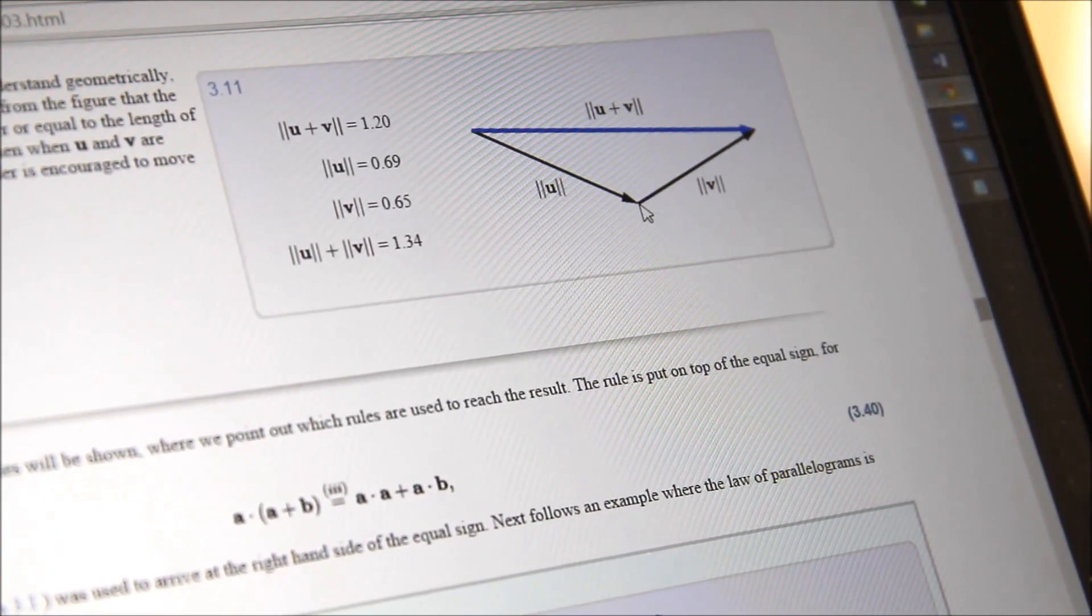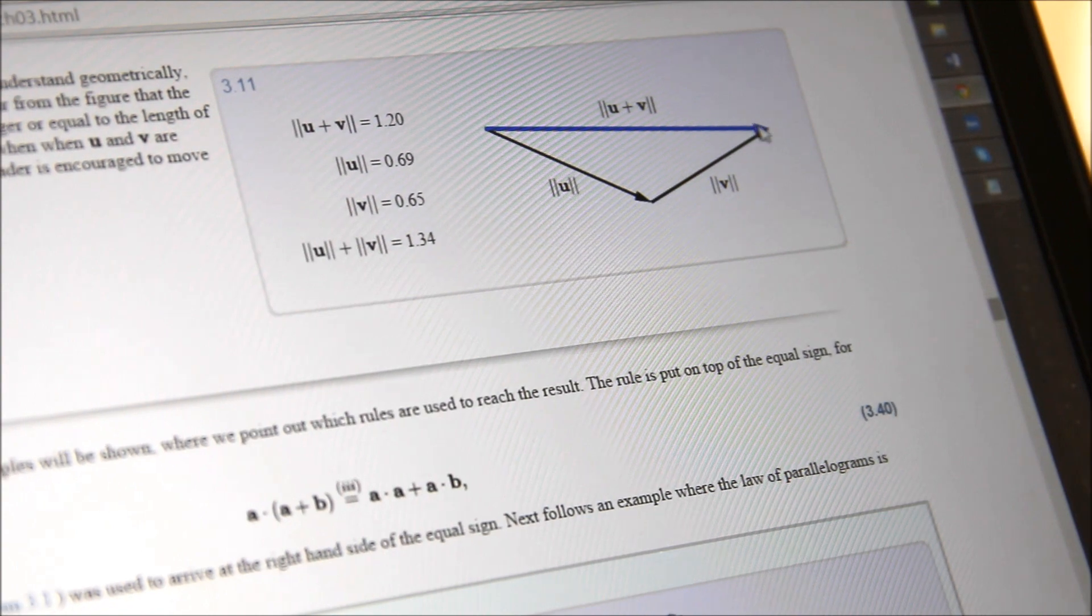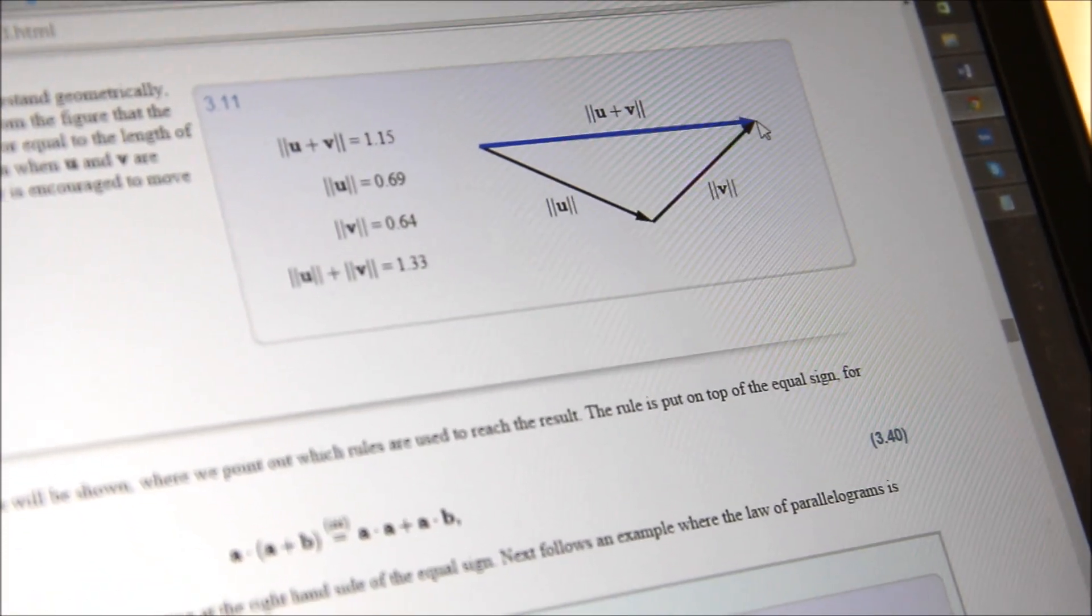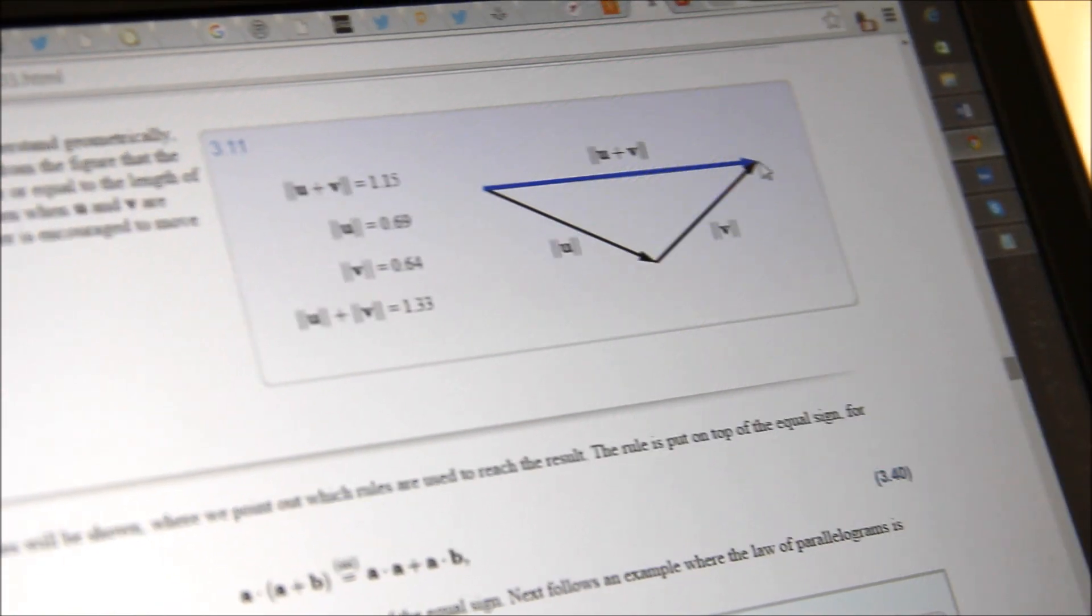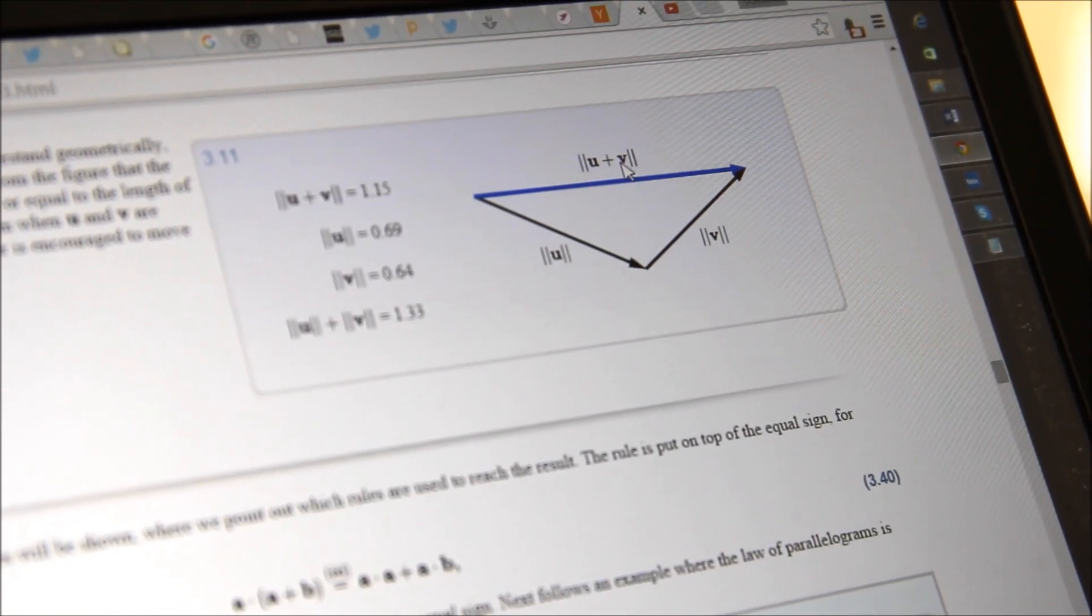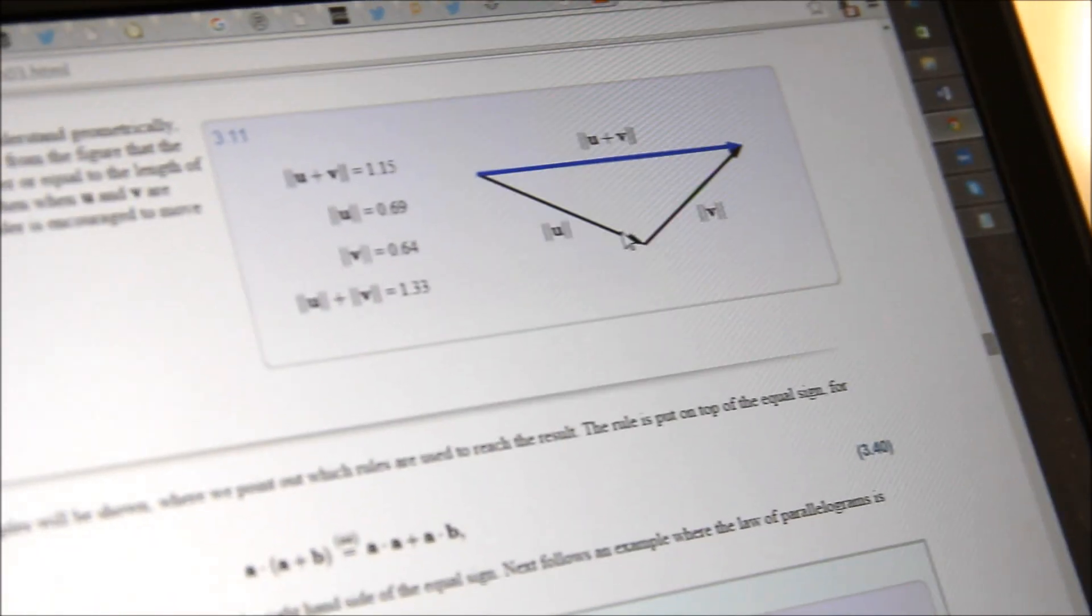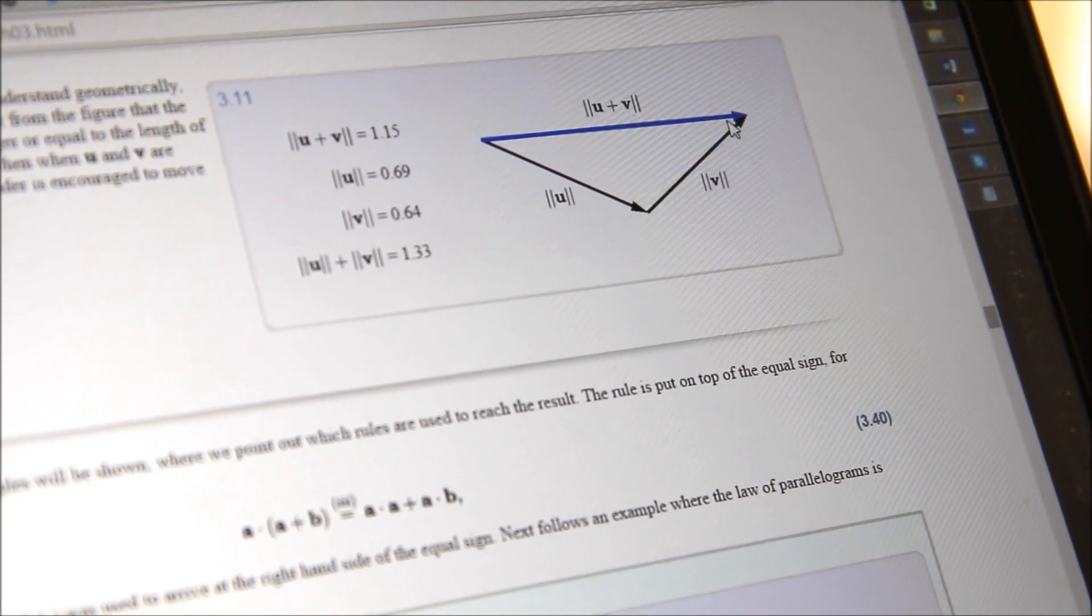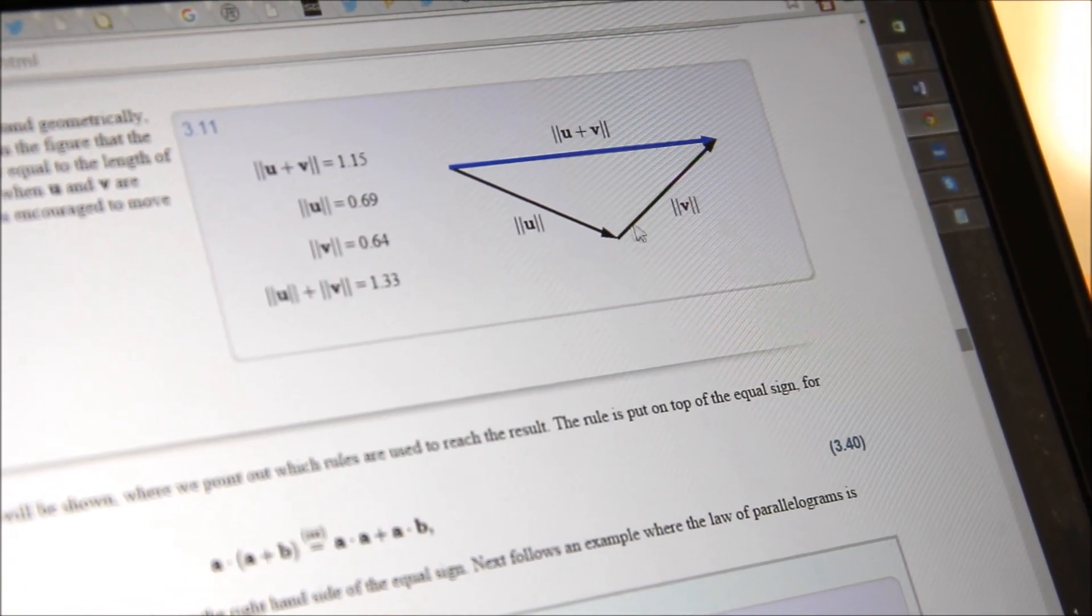You can try out what happens if I change one of these arrows here, these vectors. For instance, in this example we're illustrating the fact that the length of the vector u plus v is always shorter than the sum of the length of u and the length of v. So we know that it's shorter if you go directly or if you go via a detour.